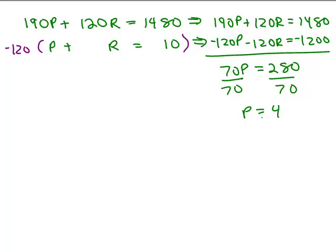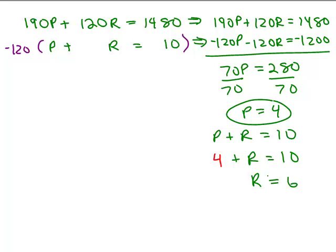So I know P is 4, that's the number of peanuts, so I can go back up to this equation, P plus R equals 10, and plug in 4 for the P. So when I subtract 4 from both sides, you get R equals 6. So basically, those are the two things we're looking for.